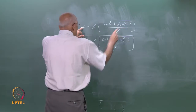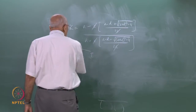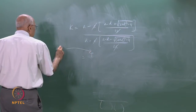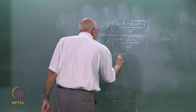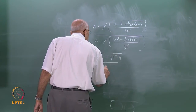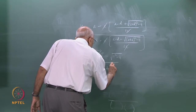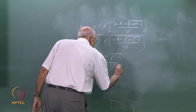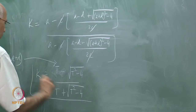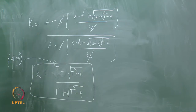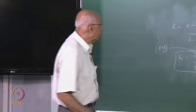So the multiplier k is determined by the trace t = a + d of the matrix — nothing more than that. It is this very compact ratio: k = (t + sqrt(t^2 - 4)) over (t - sqrt(t^2 - 4)). This is a very compact expression for the multiplier, determined entirely by the trace.